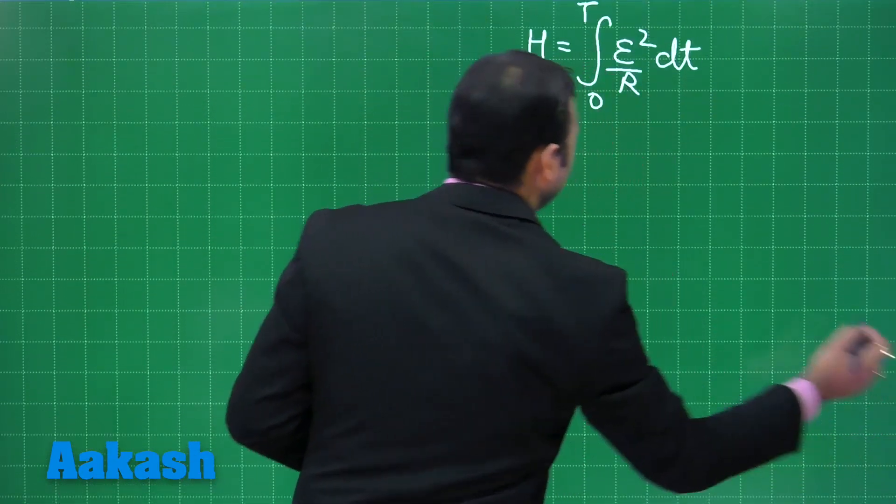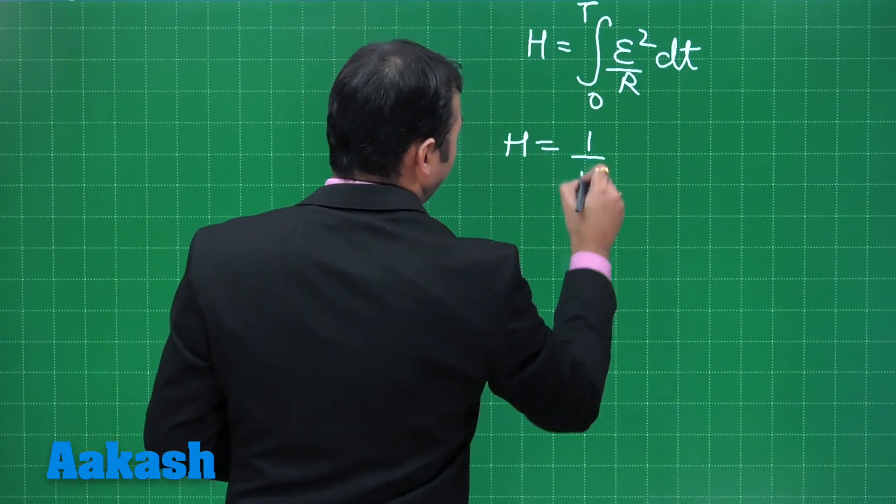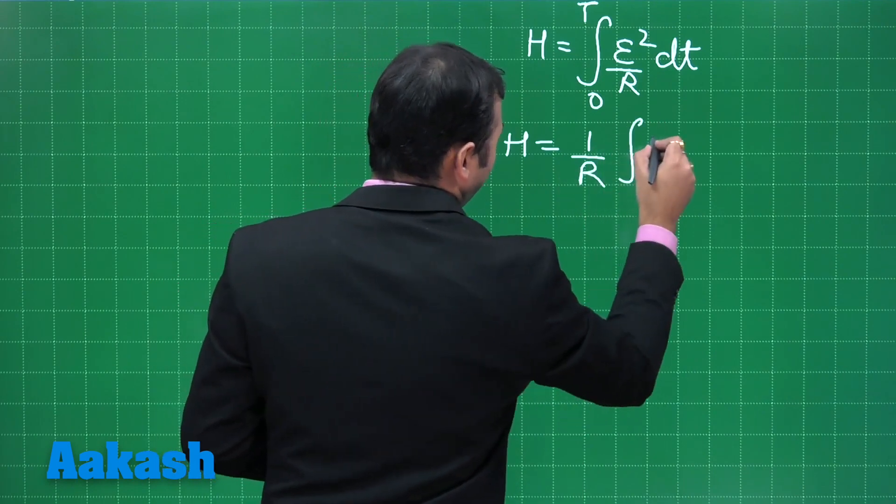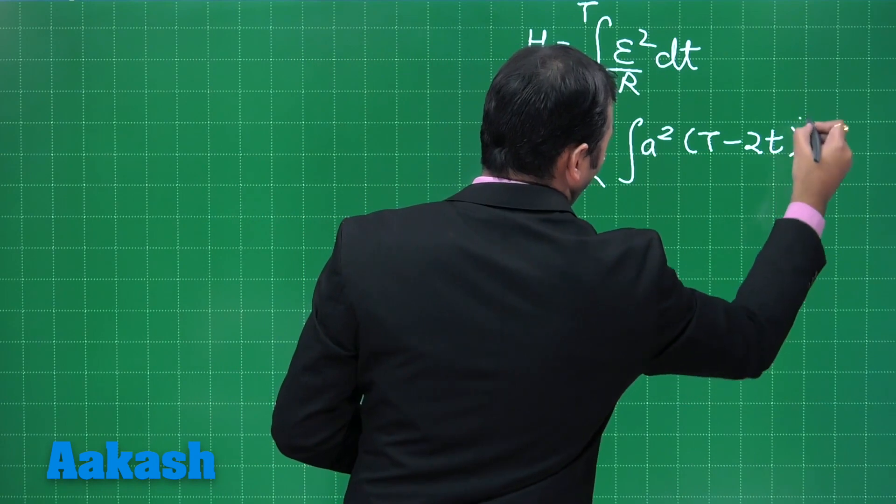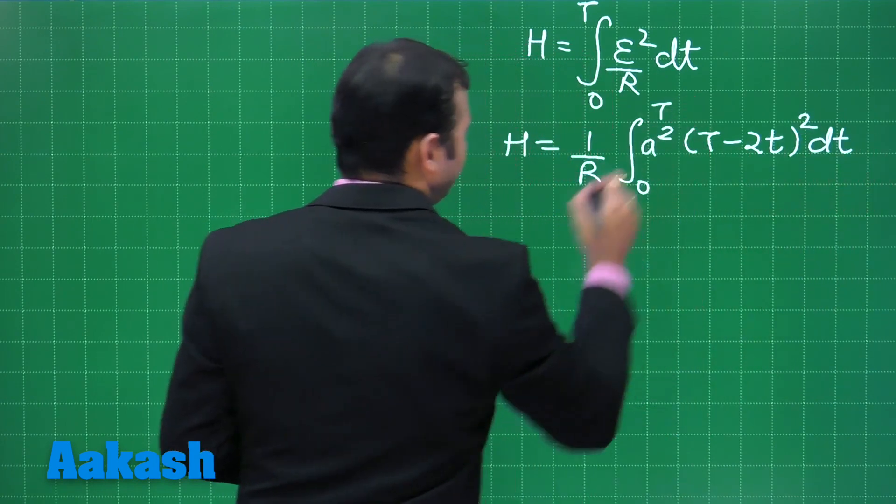Now, let us put down the values and we can easily find h is equals to 1 upon R would be a constant integral of A square capital T minus 2t whole square into dt and this should be from 0 to T.